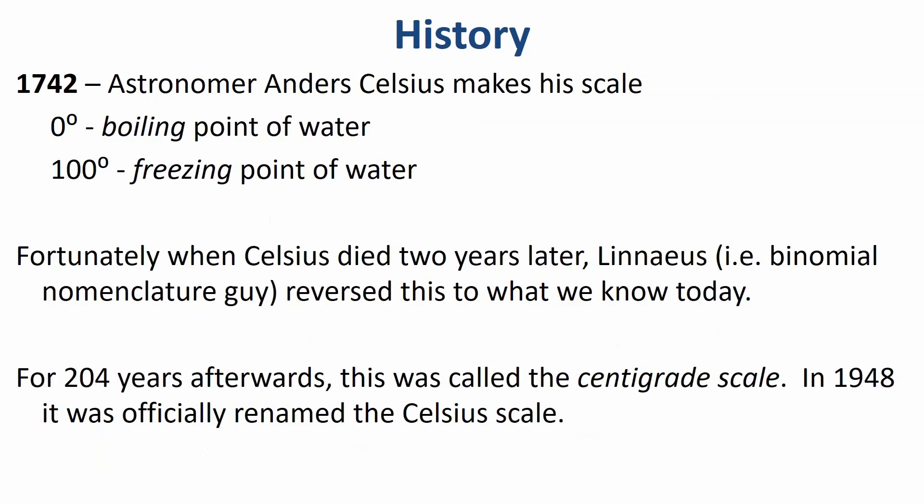Not long after Fahrenheit did his work, astronomer Anders Celsius made his scale — and check this out: zero degrees for boiling, a hundred for freezing. That's not a typo, that's what he did. Fortunately when he died, Linnaeus — you might know him from biology — reversed it to what we know today. The moral of the story: if you don't like what your advisor or professor is doing, just wait till they die and change it. This used to be called the centigrade scale, meaning just a hundred marks. Now it's been officially renamed Celsius, but you may sometimes hear people refer to it as centigrade.